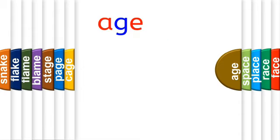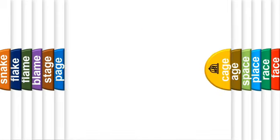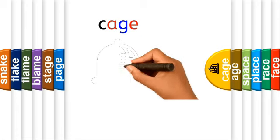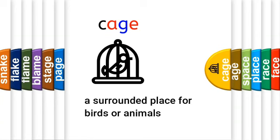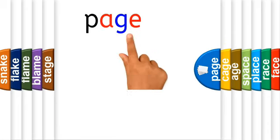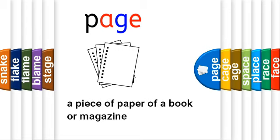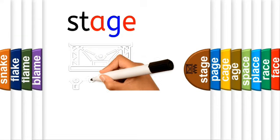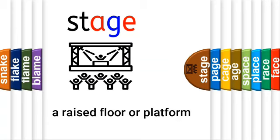And then, 'age'. Age is related to our life. Everyone and everything has an age. Age is the length of lifetime of a person. The next word: 'cage'. Then, 'page'. You use pages for writing anything, right? A piece of paper of a book or magazine is a page. And then, 'stage'. Look at the picture — someone is performing on the stage. Stage is a raised floor or platform.